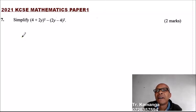Question number 7. Simplify (4 + 2y)² - (2y - 4)².